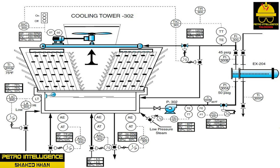Step 9 — set FIC-300 to 525 GPM and place in auto. Step 10 — start fan 300 and set SIC-300 to 250 RPM. Step 11 — set AIC-300 to 7.8 pH and place in auto. Step 12 — set AIC-301 to 30 PPM and put in auto. Step 13 — set AIC-302 to 4.5 GPH and place controller in auto. Step 14 — set TIC-301 to 125 degrees Fahrenheit and put in auto.